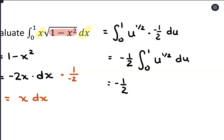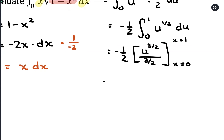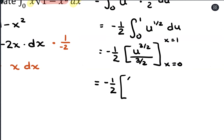Rearranging, we have negative 1/2 on the outside, times the antiderivative from 0 to 1 of u to the 1/2 du. That antiderivative is u to the 3/2 divided by 3/2, evaluating from x equals 0 to x equals 1. Then we replace u with 1 minus x squared, so we have 1/3 times (1 minus x squared) to the 3/2 divided by 3/2, from 0 to 1.